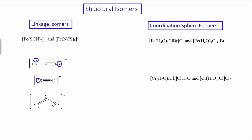We can see the same thing with the cyano ligand: when it's bonded through the carbon, we call it cyano; when bonded through the nitrogen, we call it isocyano. Similarly, with the nitro ligand, we can bond through the nitrogen or through either oxygen, giving nitro versus nitrido. With SCN, when bonded through the sulfur it's called thiocyanato, and when bonded through the nitrogen it's called isothiocyanato. The first atom listed in the formula is the one directly bonded to the central metal ion — that's how you distinguish them.